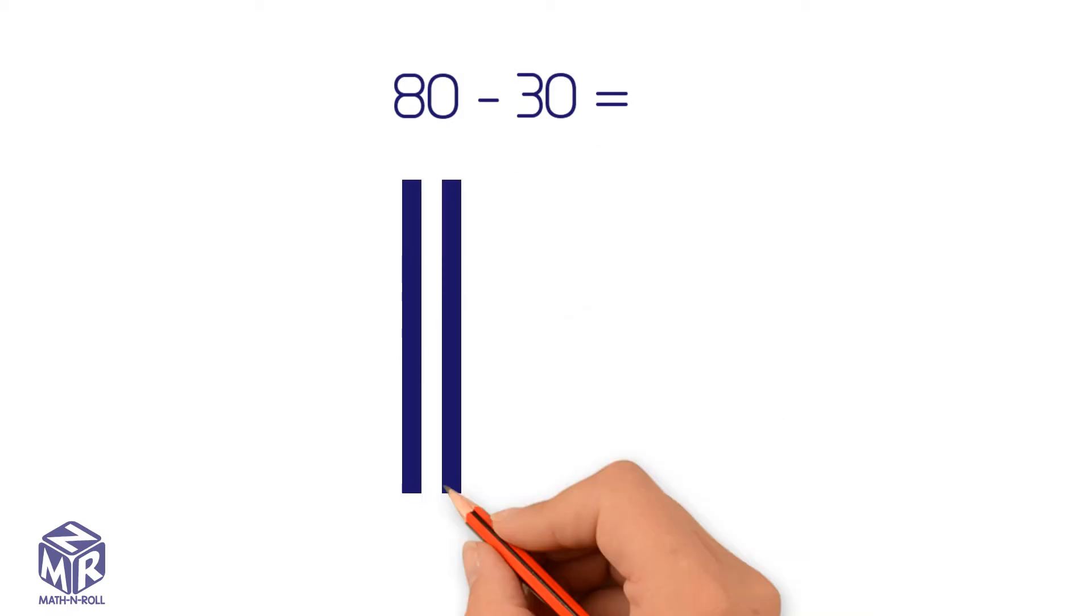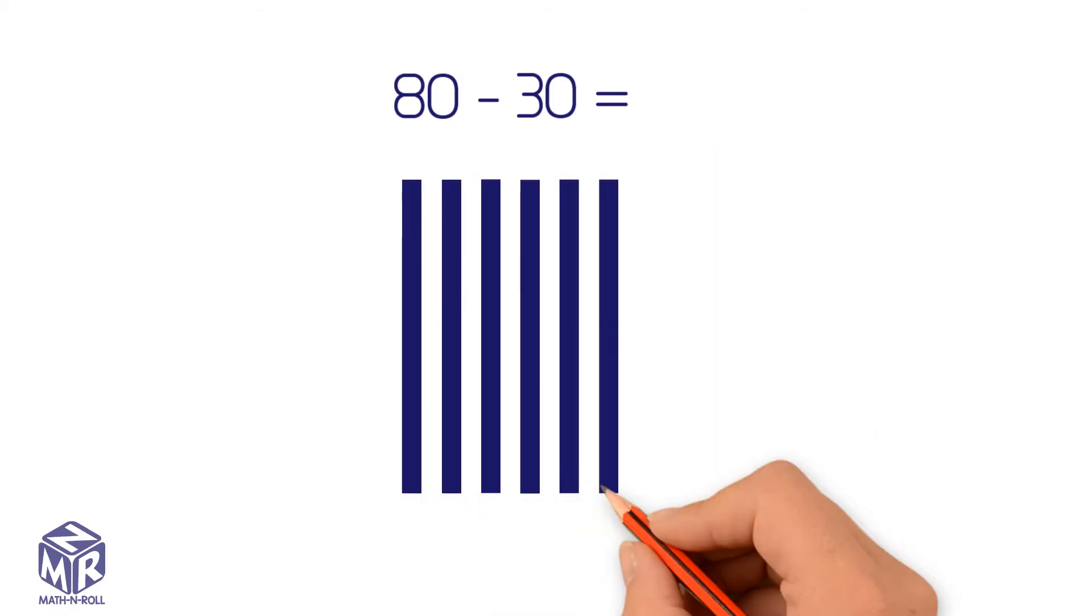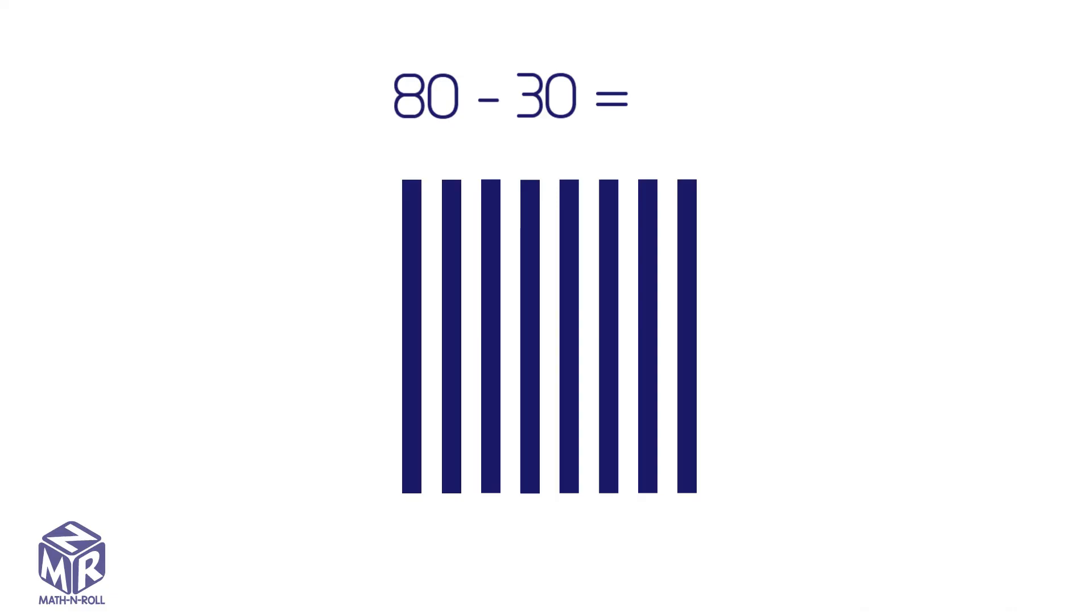Let's try another example, 80 minus 30. 80 has 8 tens and 30 has 3 tens. Subtract the tens. We get 5 tens or 50.